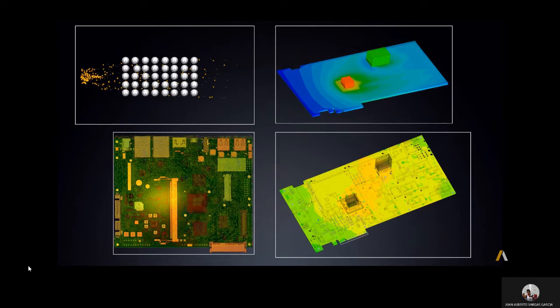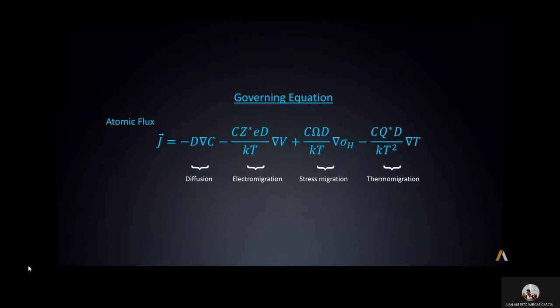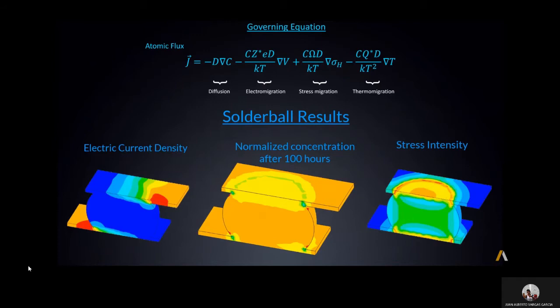Simulate PCBs in ANSYS SI-WAVE to easily identify and resolve potential electro-migration issues and boost electronics reliability. To go even deeper into the detailed physics of electro-migration at the individual component level, consider ANSYS Mechanical.